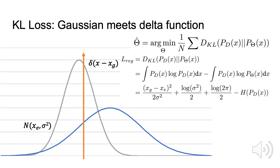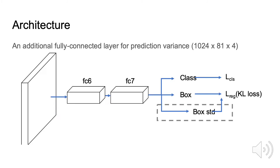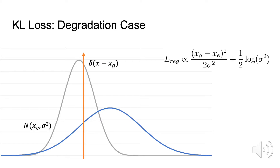Expanding the KL divergence, we obtain this expression. Discarding the irrelevant parts, we obtain our regression loss, which we name KL loss. The architecture for learning with KL loss is very simple — we add an additionally connected layer for predicting the variance, which has the same dimension as the localization branch. If we set the variance to 1, our loss becomes a standard Euclidean loss. We argue that the standard loss is a special case of our KL loss, while KL loss is able to capture uncertainty and the standard loss cannot.